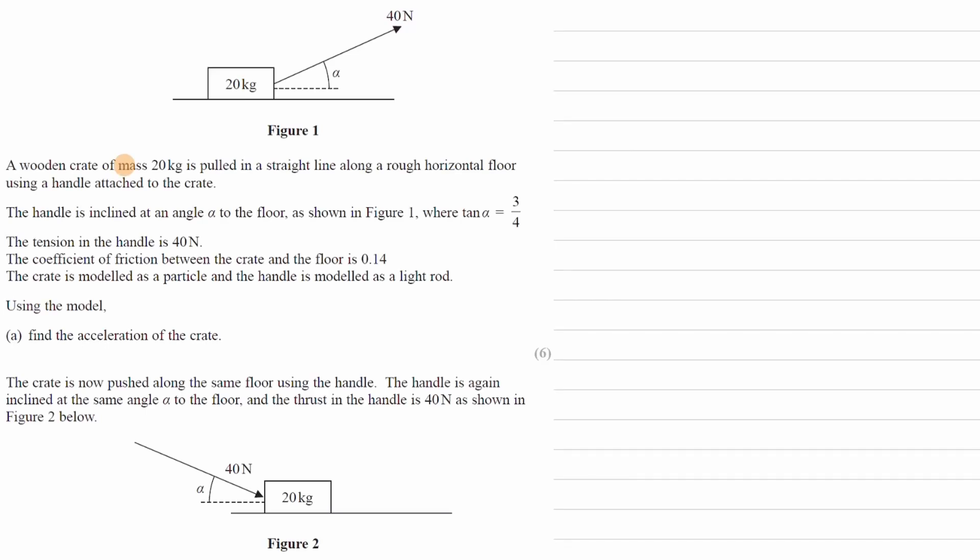A wooden crate of mass 20 kg is pulled in a straight line along a rough horizontal floor, so that means there is friction. It's pulled using a handle attached to the crate. The handle is inclined at an angle of alpha to the floor, as shown in figure 1, where tan alpha is equal to 3 over 4.